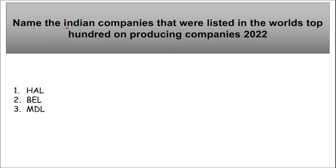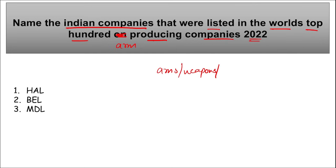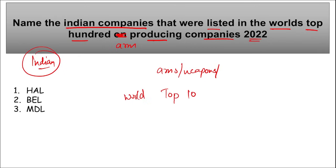First of all, let's talk about Indian companies which have been listed in the world's top 100 arm-producing companies. Arms, weapons — basically defense-related products. So India's three companies have been listed — Hindustan Aeronautics Limited, Bharat Electronics Limited, and Mazagon Dock Shipbuilders Limited — these three companies have been listed in the world's top 100 arm-producing companies list.